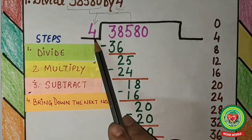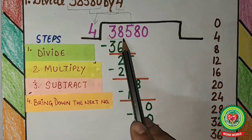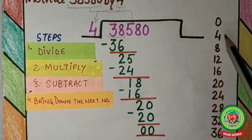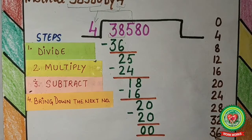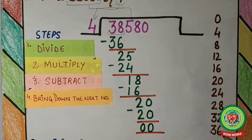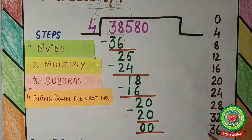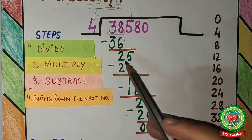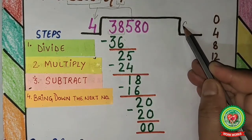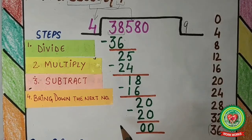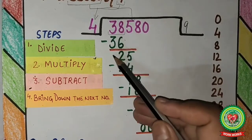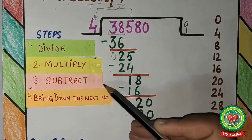3 is smaller than 4, so we can't divide with 4. We need the next number, which becomes 38. In the table of 4, 38 does not appear. So we need the number just less than 38 that is a multiple of 4. That is 36. 4 times 9 is 36. So 36 comes here and 9 comes up in the quotient.